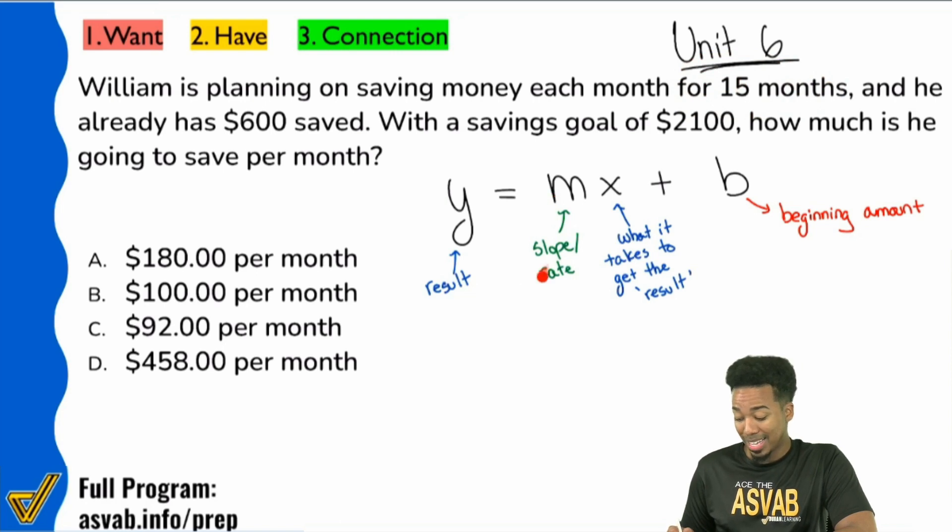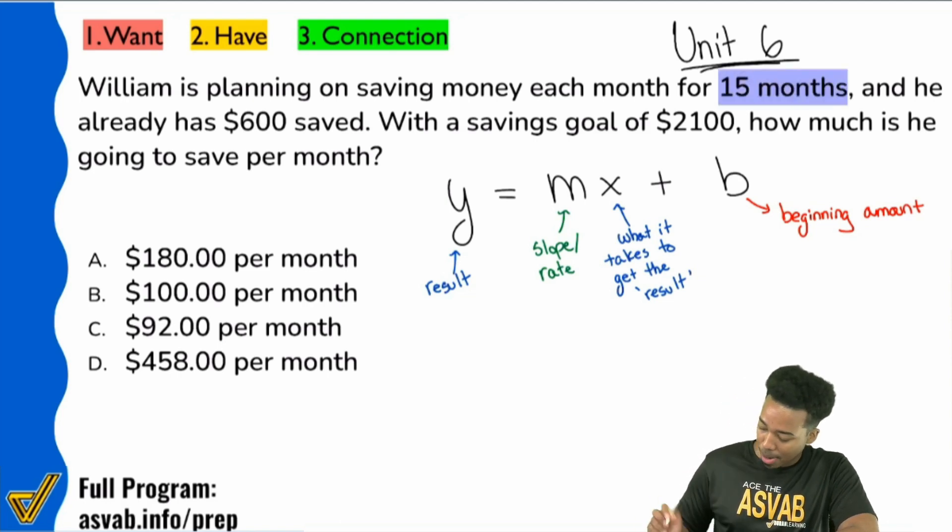Remember, m is the slope or the rate, how quickly something's happening. If you're looking at a slope, you need to see the word per for the rate, like $15 per month or 100 miles per hour. I don't see that here. I just see 15 months. Yeah, that's going to be the x because x is usually time. Exactly. This is months, that's x. So I'm going to plug in the 15 right here.